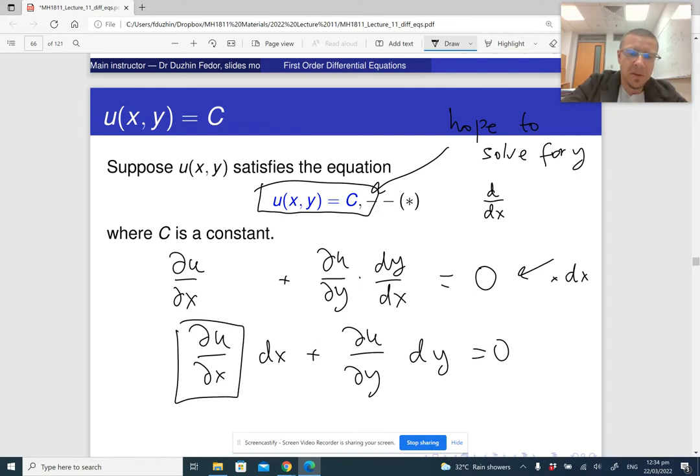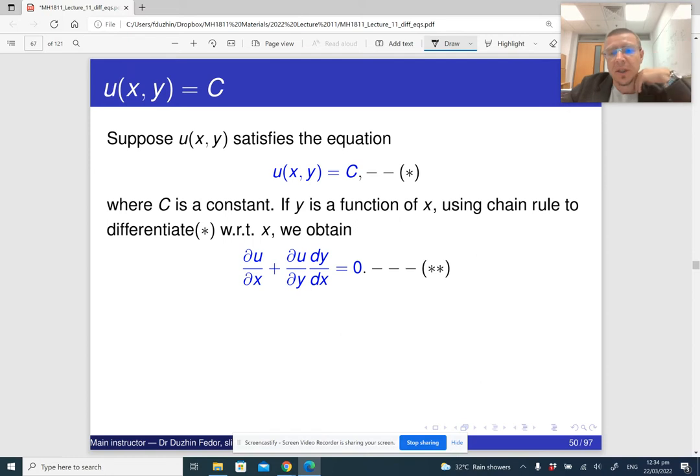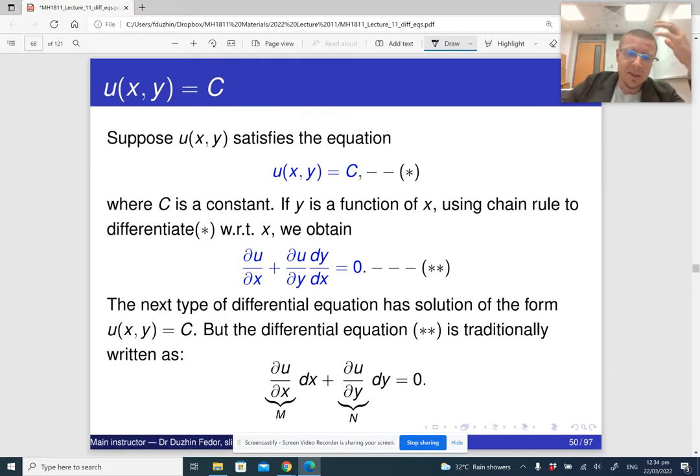Then we get something like this: du/dx dx plus du/dy dy is zero. And basically, if this is m and this is n, then this is the kind of type of equation that we are trying to solve. So m dx plus n dy, where m and n are functions of x and y. This is the chain rule, and here is how we traditionally write such a differential equation.